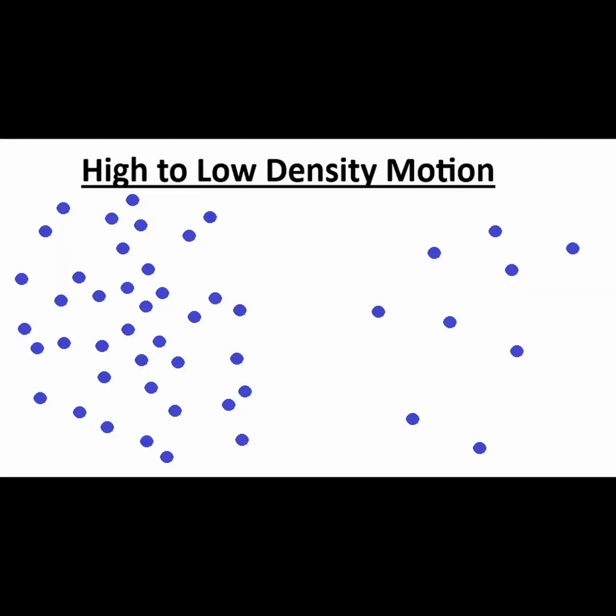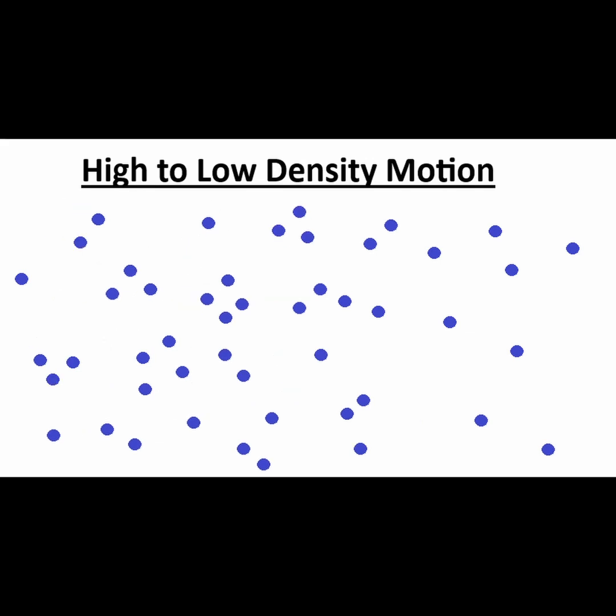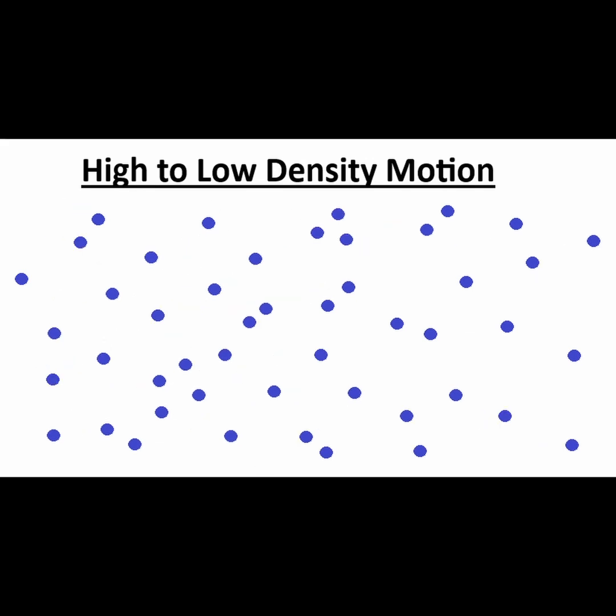However, if molecules only moved from higher density areas to lower density areas, then the regions would balance out their densities and the wave would simply disperse out smoothly without any oscillation or sound.